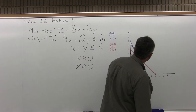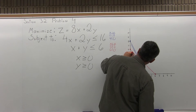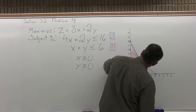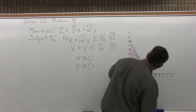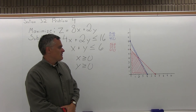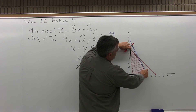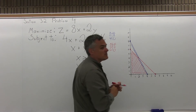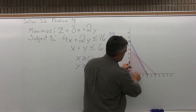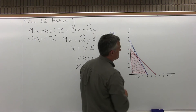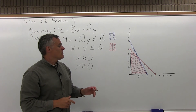The area that satisfies everything is the heavily shaded area in my graph. Notice I didn't shade into the two outer triangles — that's a common mistake. Don't shade too much. You have to be just in the area that's shaded, satisfying all the linear inequalities simultaneously. So step one, graph your feasible region, is now complete.